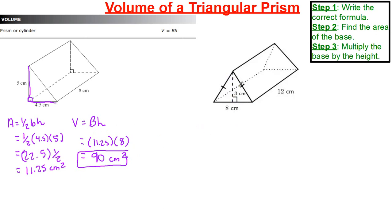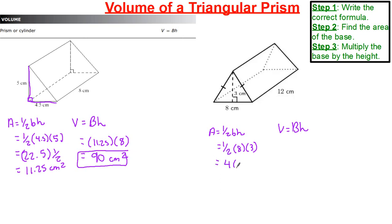This next example is an isosceles triangle, not a right triangle, so the height is in the middle. Volume equals capital B times H. Area equals half the base times height. We have half of 8, multiplied by our height of 3. Half of 8 is 4, so 4 multiplied by 3 gives 12 centimeters squared. Our base 12 multiplied by height 12 gives us 144 centimeters cubed.